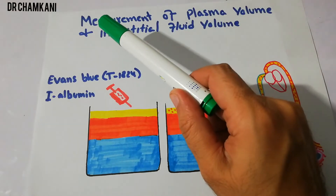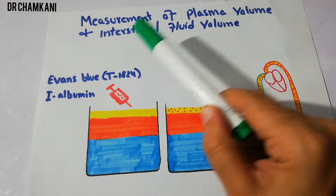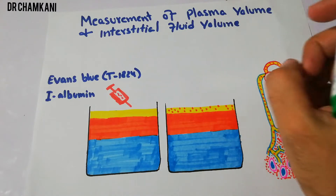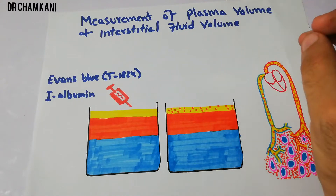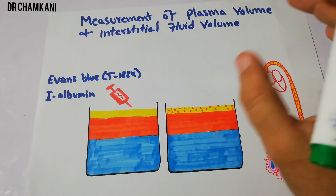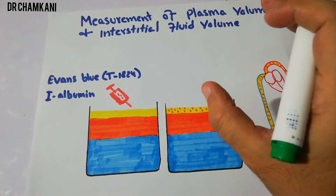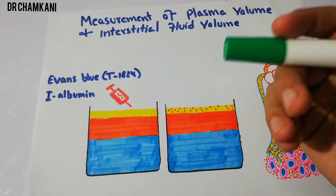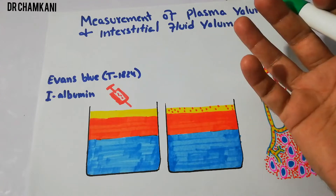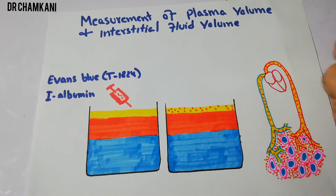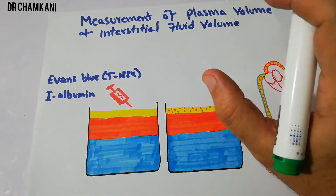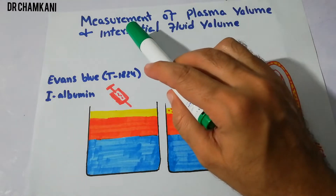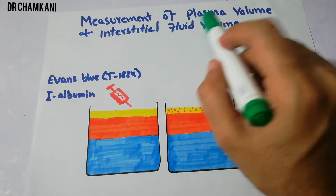In this lecture we are going to talk about the measurement of plasma volume and interstitial fluid volume, and we are going to measure these volumes with the help of the indicator dilution method.